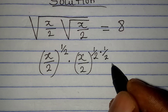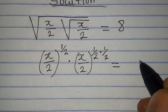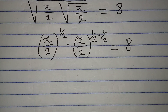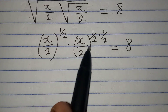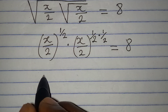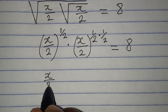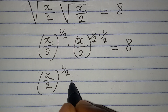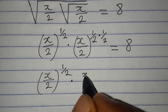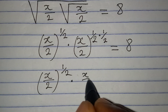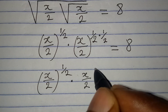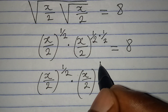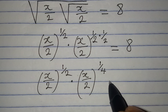That second x over 2 under the square root will be raised to 1 over 2 times 1 over 2, since any number raised to the power of 1 over 2 is the square root of the number. So this is equal to 8. Working on the left-hand side, we have x over 2 to the power of 1 over 2, then to the power of 1 over 2, multiplied by 1 over 2, which gives 1 over 4.